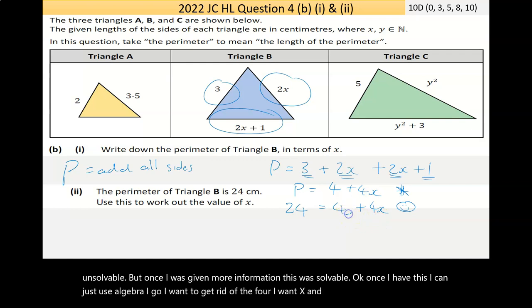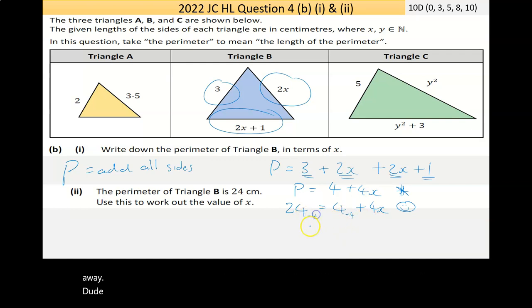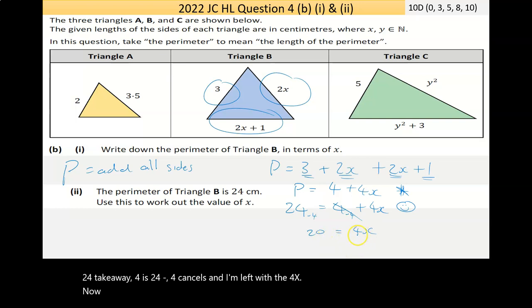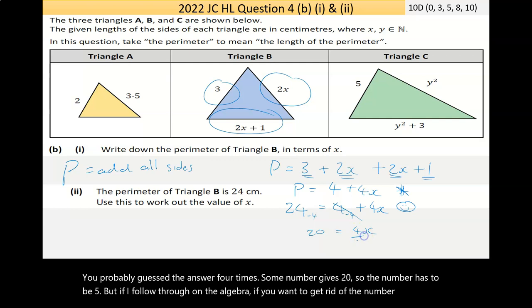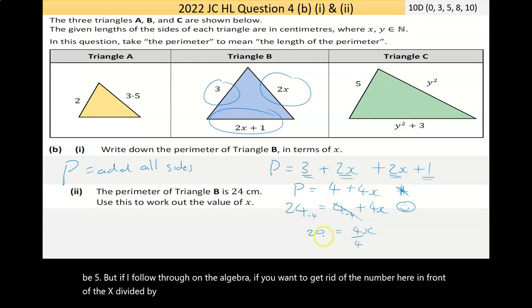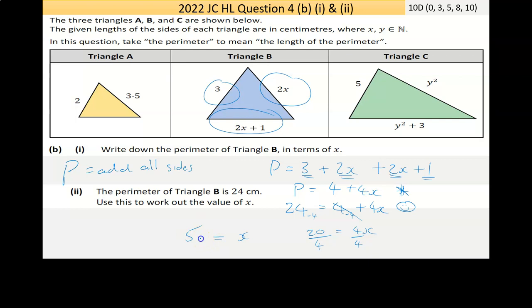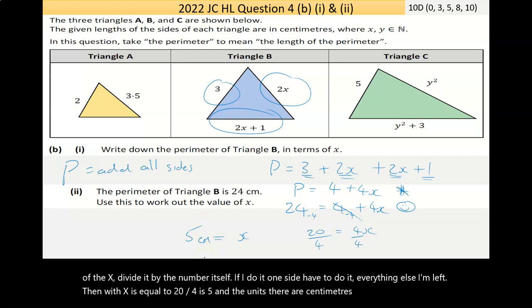I want to get rid of the 4. I want X on its own. So let's take the 4 away. Do it once, do it both. 24 take away 4 is 20. 4 minus 4 cancels. I'm left with the 4X. Now, you probably guessed the answer. 4 times some number gives 20, so the number has to be 5. But if I follow through in the algebra, divide it by 4. I'm left with X is equal to 20 divided by 4 is 5, and the units are centimeters.